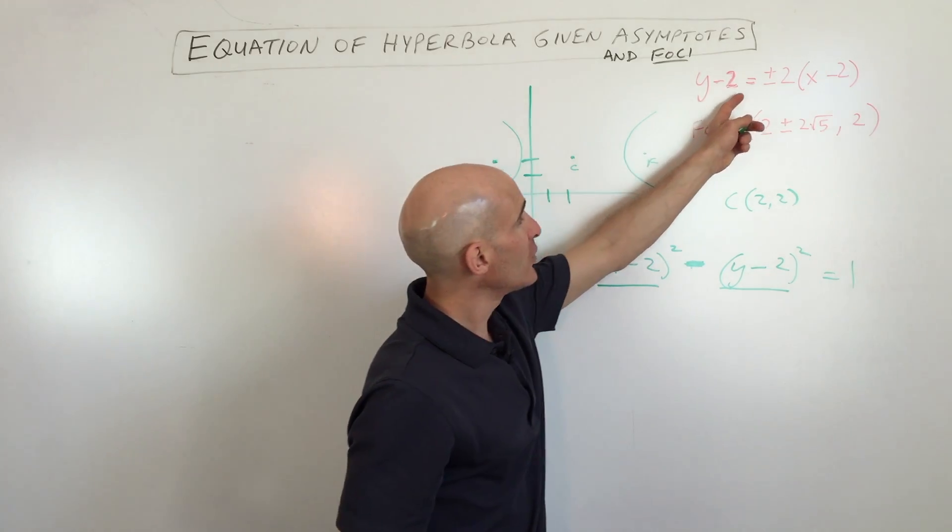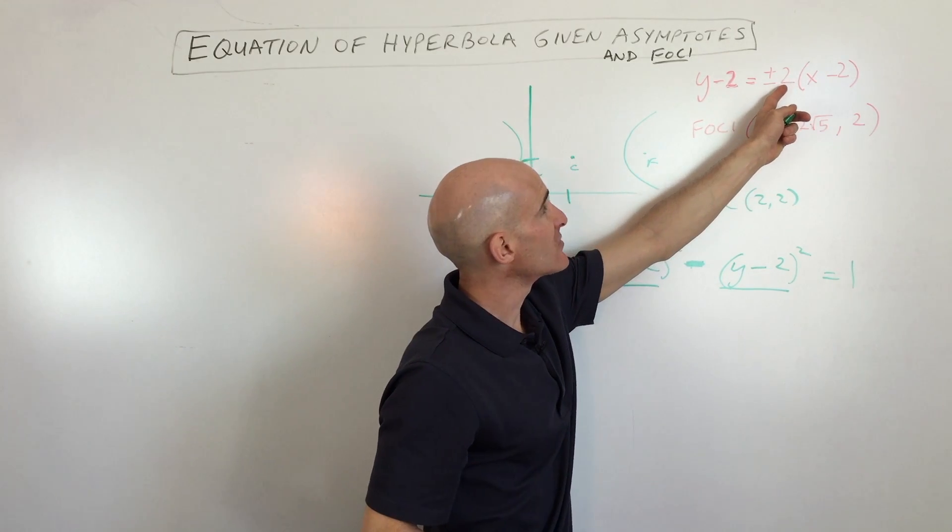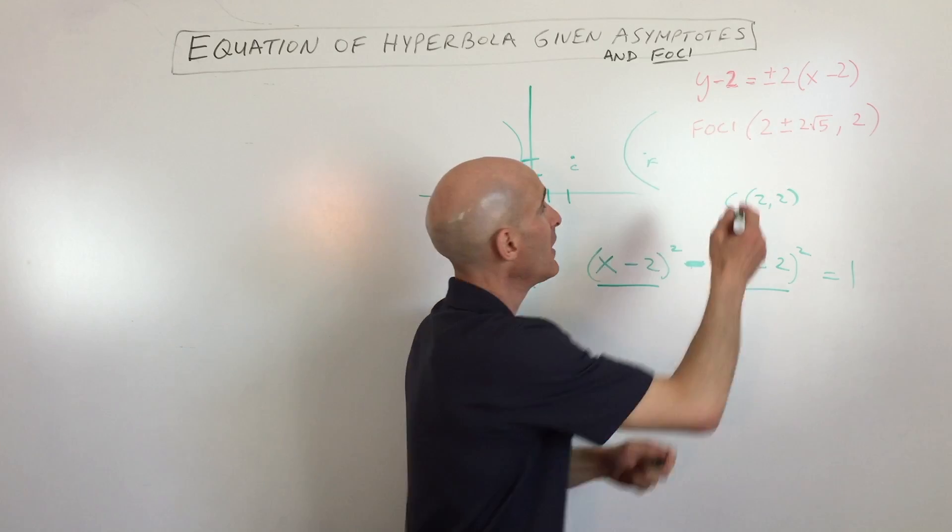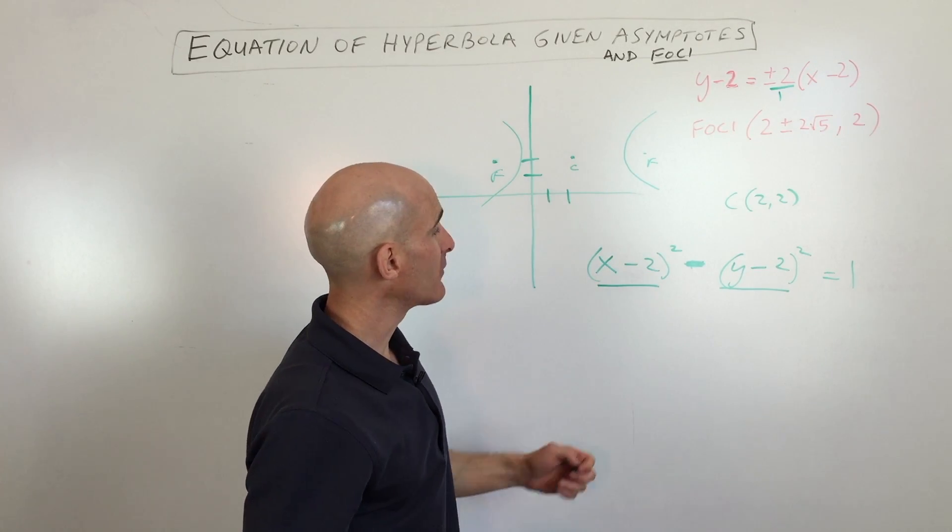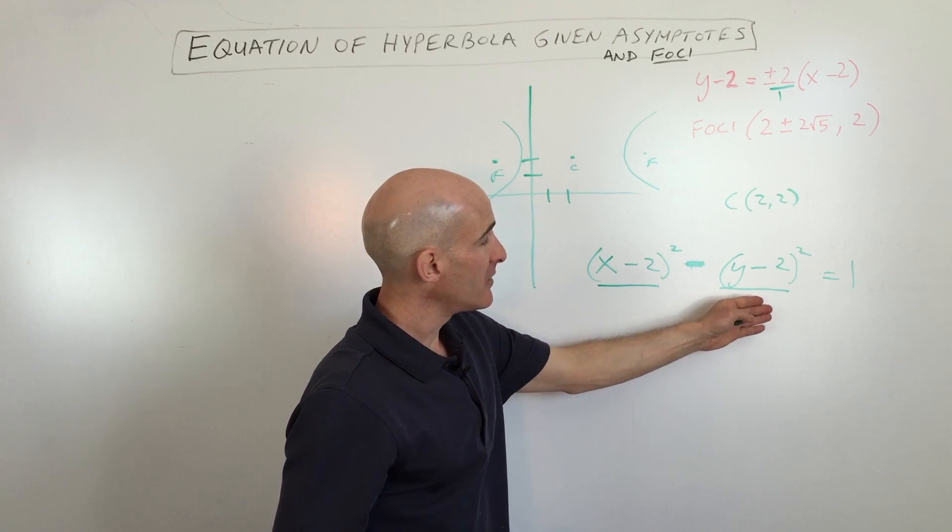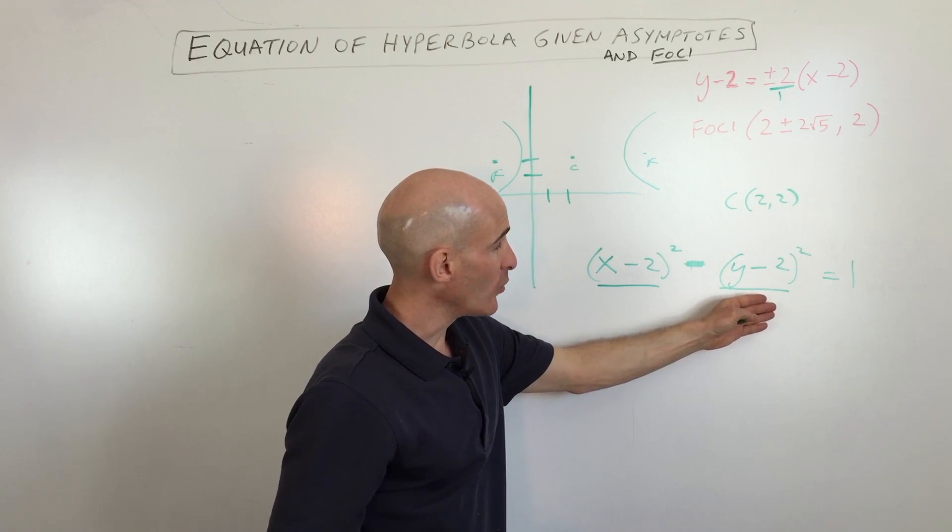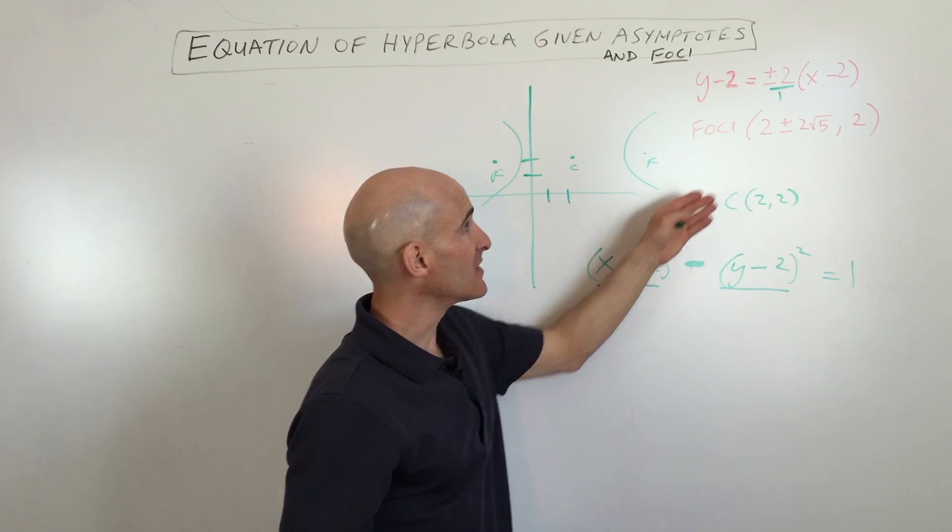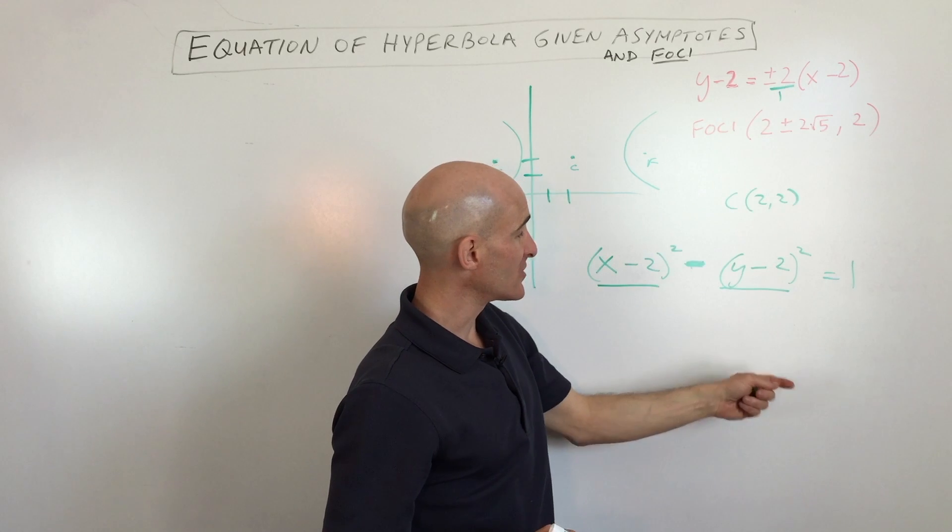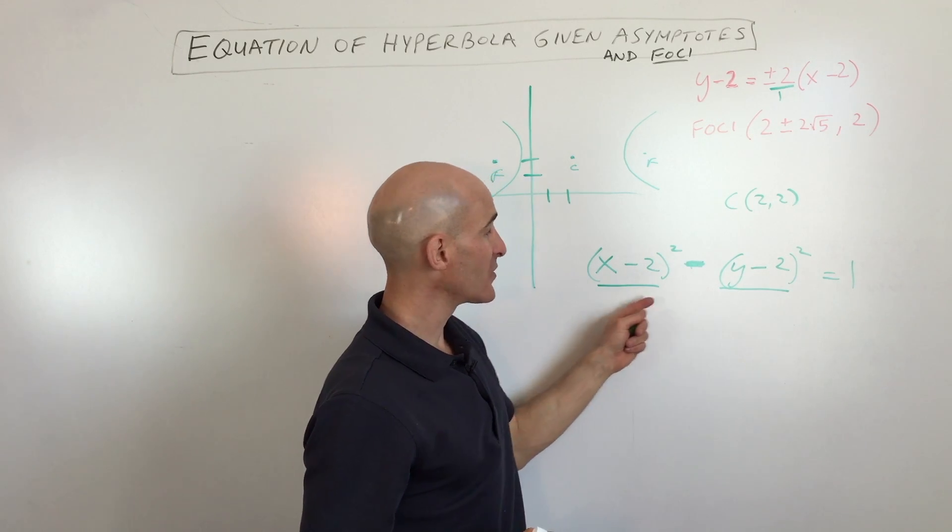Now we look at our asymptotes here, and we can notice that the slope is 2, plus or minus 2 over 1. Anything divided by 1 is itself. And we know that the ratio of the quantity that's underneath the y term divided by the x term is going to be the slope of the asymptote.